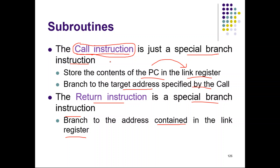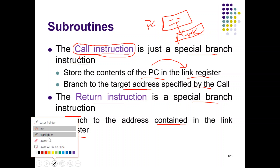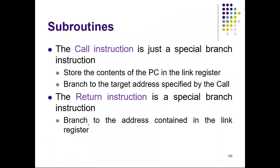The CALL instruction will store the content of PC — which is the instruction that follows the CALL instruction — into the link register. And the PC will be updated with the address specified in the CALL instruction. Whenever there is a RETURN instruction, the control will move to the address specified in the link register.